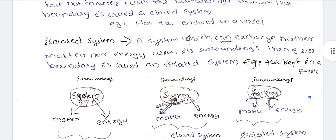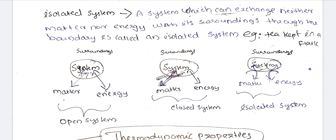An isolated system is one which can exchange neither matter nor energy with the surroundings through the boundary. For example, hot tea kept in a thermos flask. To summarize: in an open system, both matter and energy are exchanged; in a closed system, only energy is exchanged; in an isolated system, neither matter nor energy is exchanged.